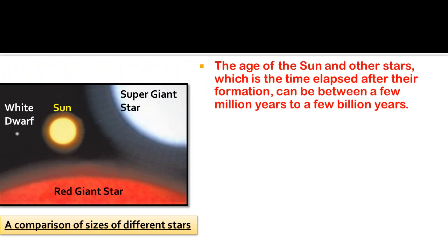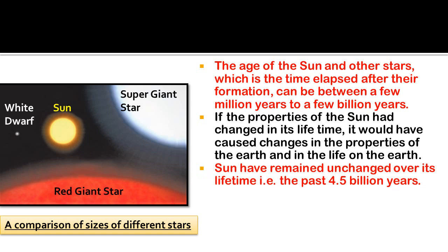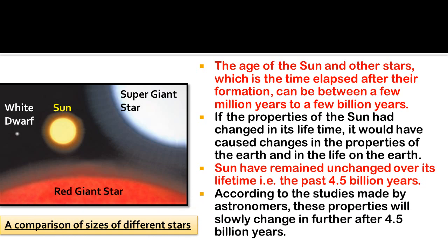The age of stars — the time elapsed after their formation — can range from a few million to a few billion years. If the Sun's properties had changed over its lifetime, it would have caused changes in the properties of Earth and life on it. Detailed studies show the Sun's properties have remained unchanged over the past 4.5 billion years, though according to astronomers they may slowly and gradually change after another 4.5 billion years.